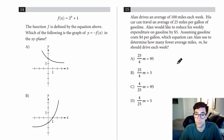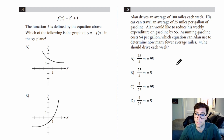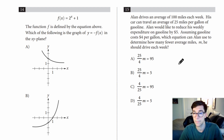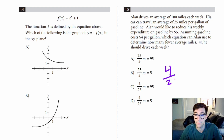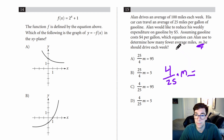Number fifteen: Alan drives an average of 100 miles each week. His car travels 25 miles per gallon. He'd like to reduce his weekly gas expenditure by $5; gas costs $4 per gallon. The cost of driving one mile is 4 over 25, and M is the number of fewer miles. So the equation is (4/25) times M equals 5. That's going to be choice D.